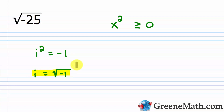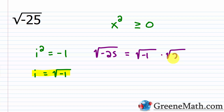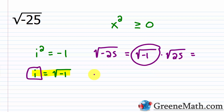Using this definition, we can rewrite the square root of negative 25 using the product rule for radicals. We say this is the square root of negative one multiplied by the square root of 25. We know the square root of negative one is defined to be i, so we replace that with i. Then i times the square root of 25 — the principal square root of 25 is 5 — so this becomes 5 times i, or 5i. By using the imaginary unit i, we push past our restrictions with real numbers and get a solution. The square root of negative 25 simplifies to 5i.